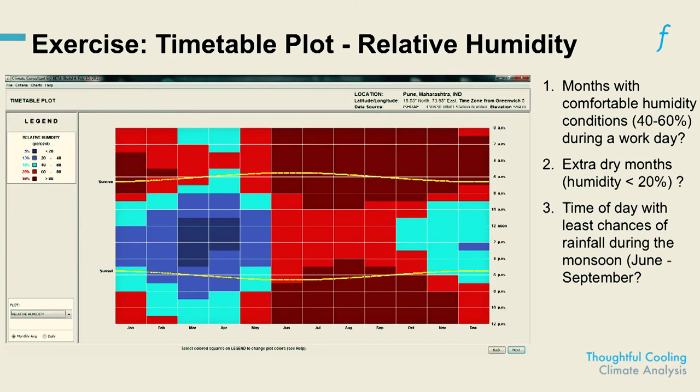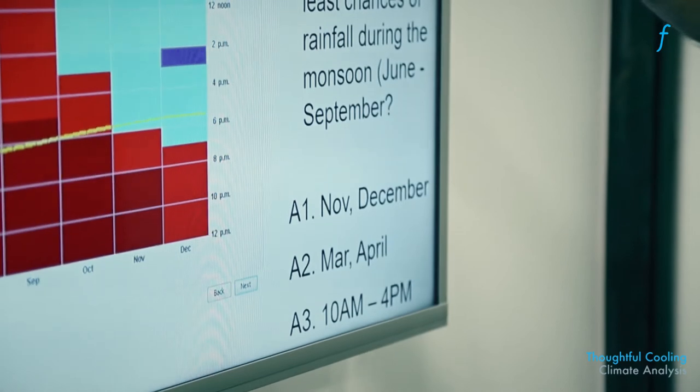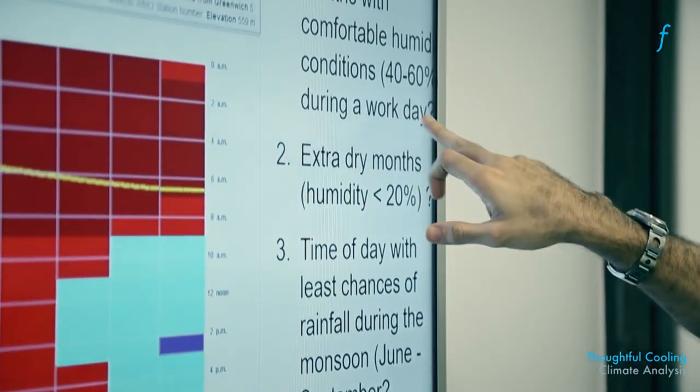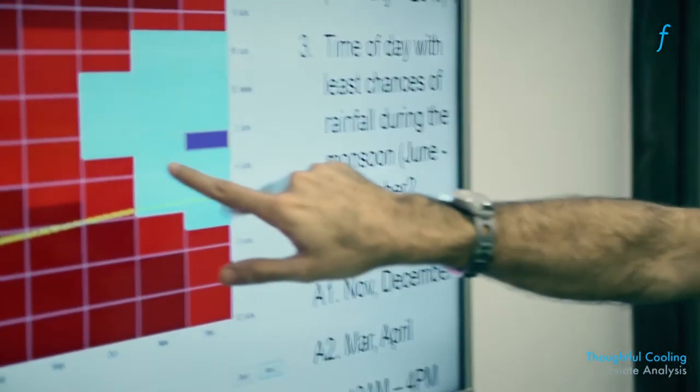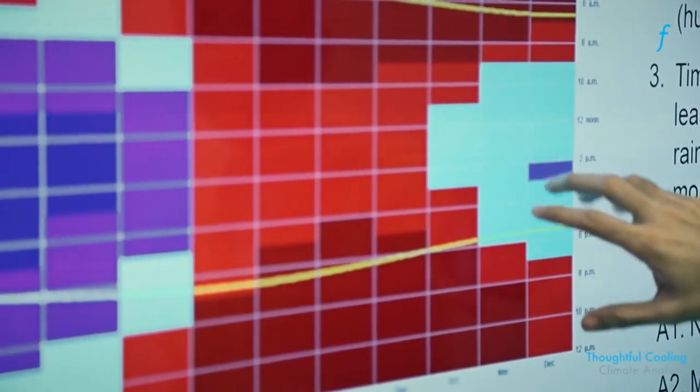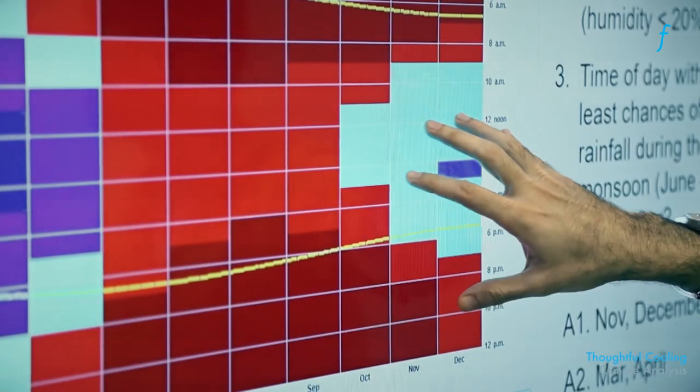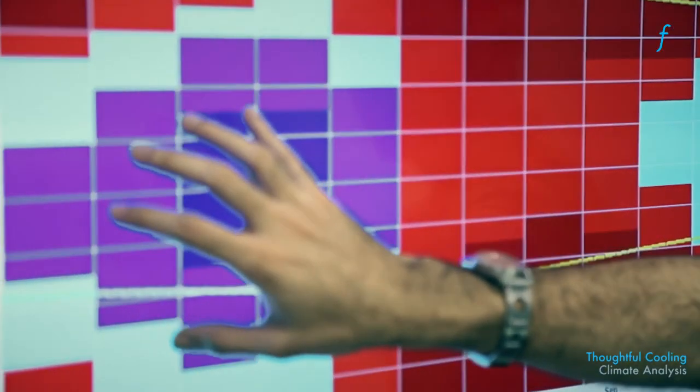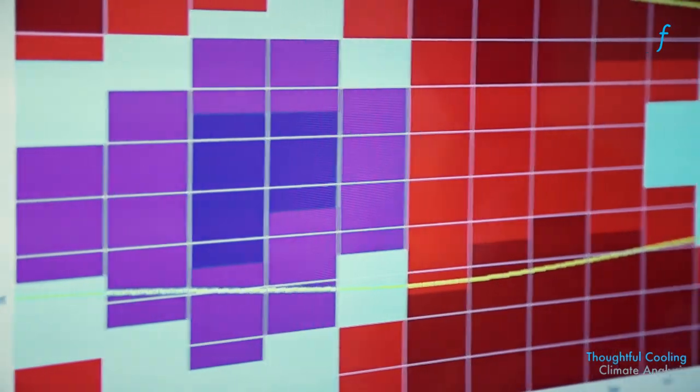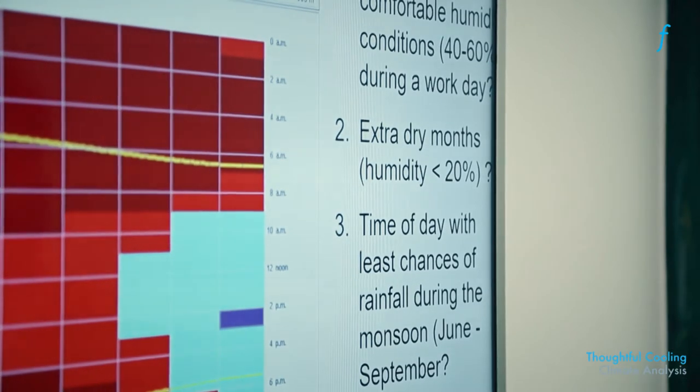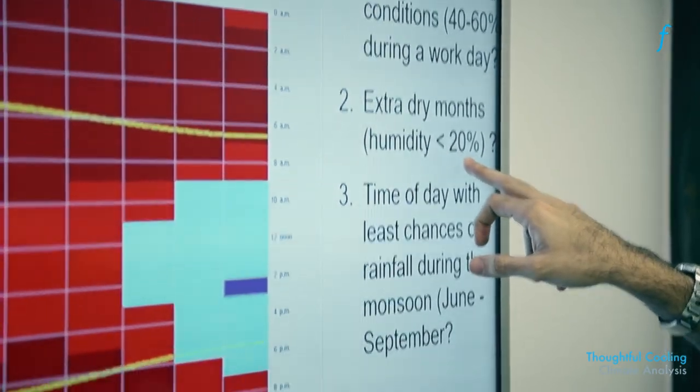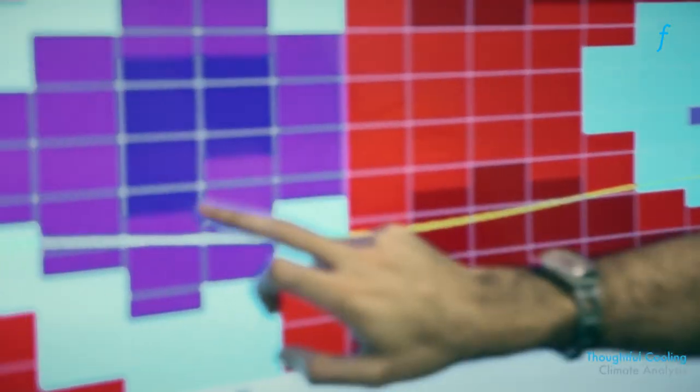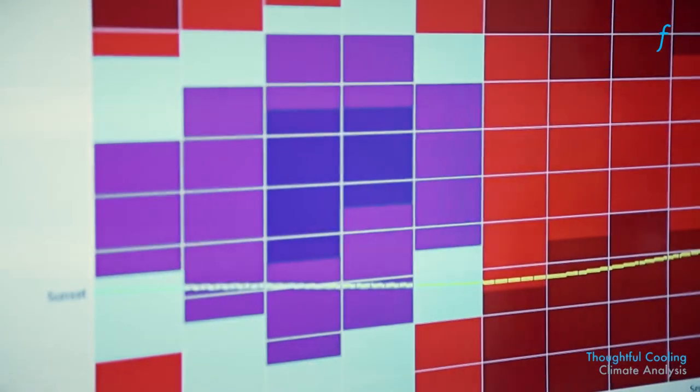So here is the answer which corroborates what we just said. Months with comfortable humidity conditions during a work day—that's November or December. So that's here, during the work day you have relatively moderate humidity, whereas here it's very low humidity, it's too dry during the work day. The second question is: extra dry months are months with less than 20 percent humidity—that's these months with the dark blue, that's March and April. And 10 AM to 4 PM is where you have the least chance, as we had indicated earlier, of getting rainfall in the city of Pune during the monsoon months.